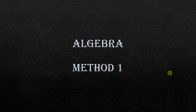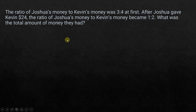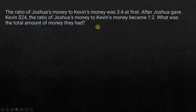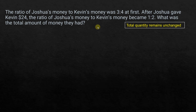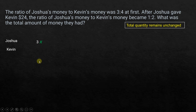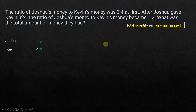Using algebra, we'll look at two different methods. Method 1: the ratio of Joshua's money to Kevin's money was 3 to 4 at first. We use the same technique — total quantity remains unchanged. Say Joshua has 3x and Kevin has 4x. The actual numbers are multiples of 3 and 4 — it could be 3×2 and 4×2, or 3×3 and 4×3 — that's why we represent them as 3x and 4x.